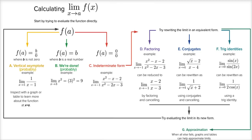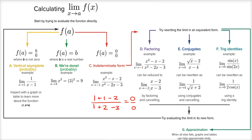But let's say we don't fall into either of those situations. What if when we evaluate the function we get zero over zero? Here is an example: the limit as x approaches negative one of this rational expression. You get negative one squared, which is one, minus negative one, which is plus one, minus two — so zero in the numerator. In the denominator, negative one squared is one, minus two times negative one is plus two, minus three — which is also zero. This is known as indeterminate form, and so on our flowchart we continue to the right side, where there are several techniques for tackling indeterminate form.